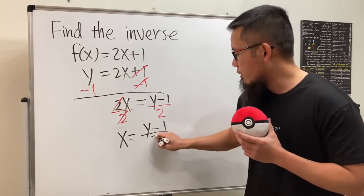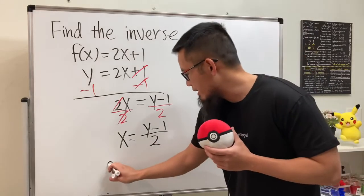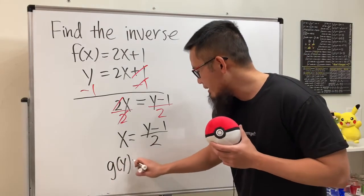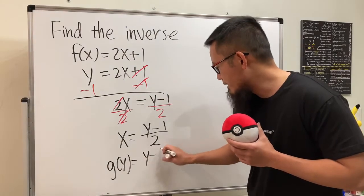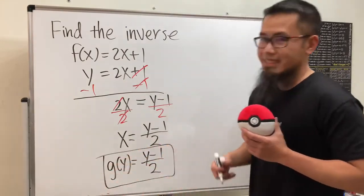Well, this is it. By the notation for the inverse, we will write it as g(y) being equal to y minus 1 over 2, and that will do it.